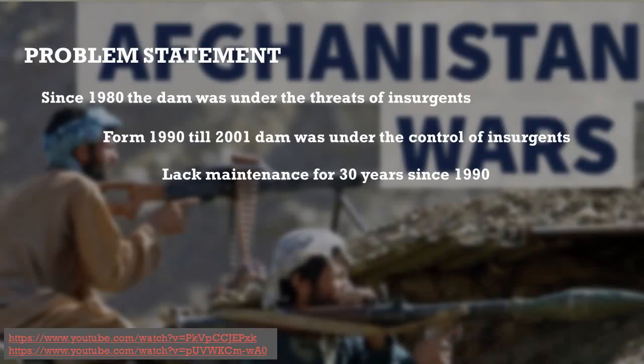Since 1980, the dam was under the threat of insurgents during the civil war. From 1990 till 2001, the dam was under the control of the insurgents. Lack of maintenance is one of the most significant challenges for the dam.